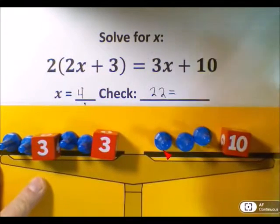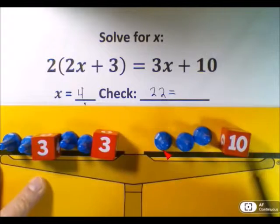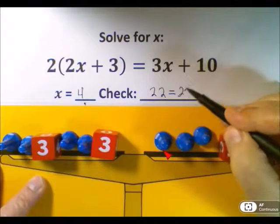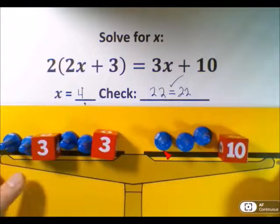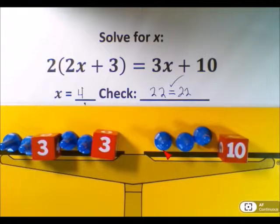And on the right side, I have 4, 8, 12 and 10 is 22. So since both sides have the same value, that means that x equals 4 is the correct answer to this equation.